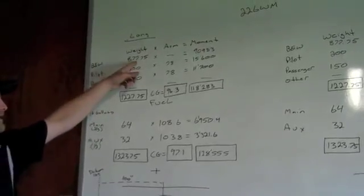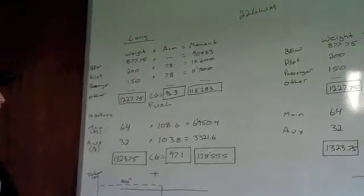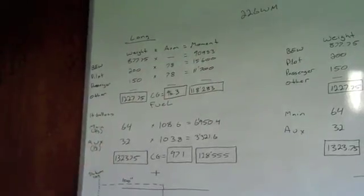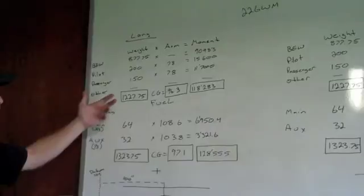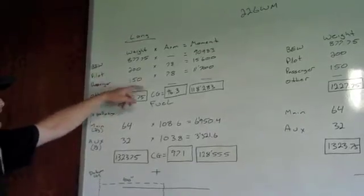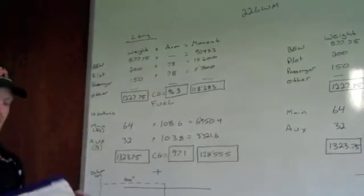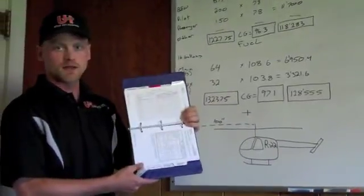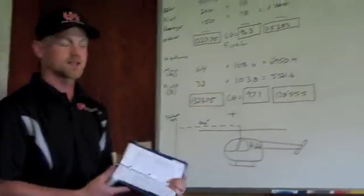Its basic empty weight is 877.75. The factory is nice enough to give us a moment so we don't have to compute that. Then we just add in our pilot and passenger times it by the arm which can be found in the POH in section 6 weight and balance. All aircraft have a weight and balance section in their POH.